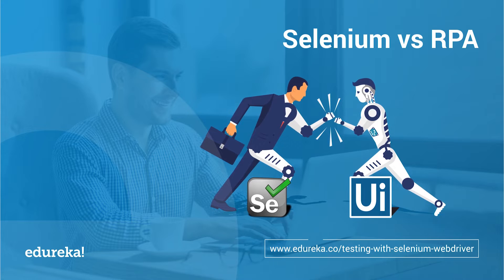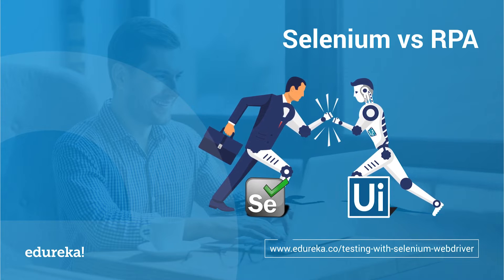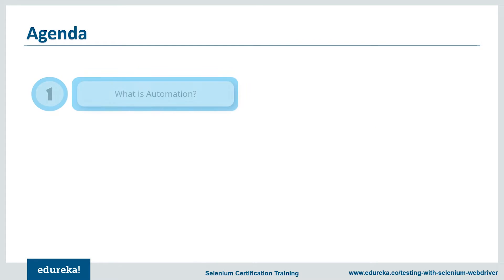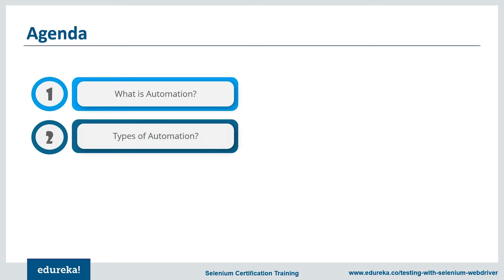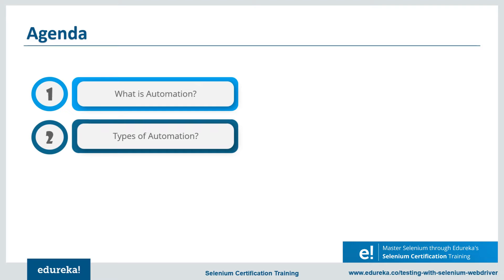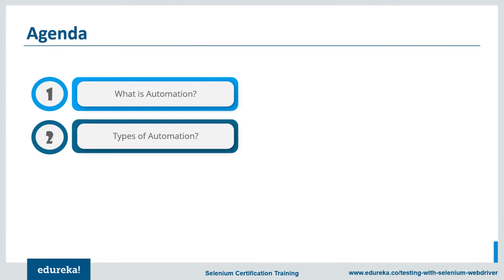Let's take a look at the agenda for this session. First, we'll start by understanding what automation is and take a real-time example demonstrating its advantages. Then we'll discuss the different types of automation that exist, followed by a brief introduction to automation testing and business process automation — the major fields where one can build a career.